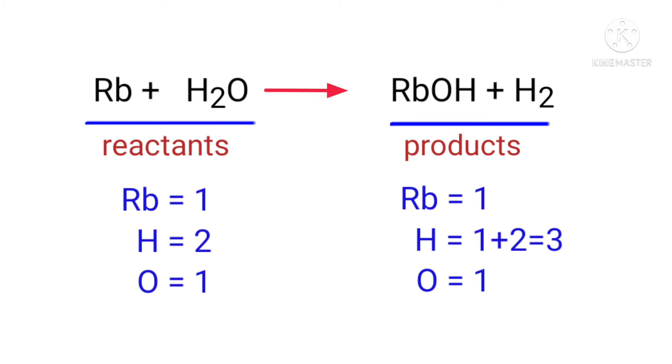The number of atoms are not balanced on both sides. To balance the chemical equation, we need to make use of coefficients. A coefficient is a number that we place in front of a chemical formula.